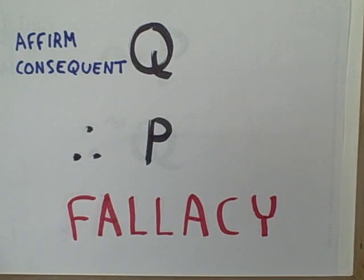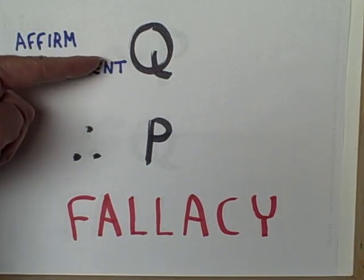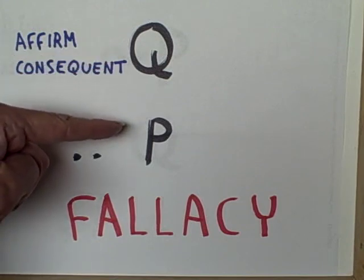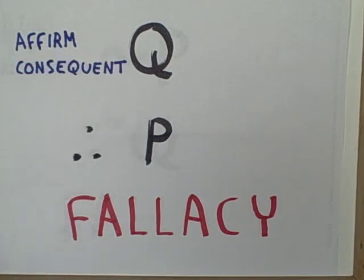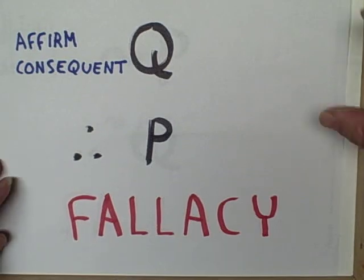However, we can't go in the other direction. We can't say we've observed Q exists, therefore P exists. No, that's a fallacy — it does not always work. A fallacy is something that cannot guarantee that true premises will lead to a true conclusion. This fallacy is known as affirming the consequent.